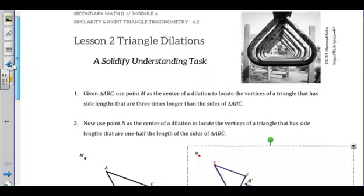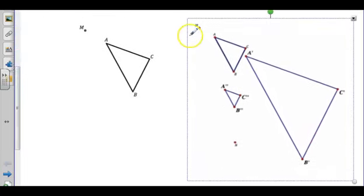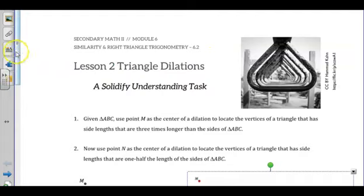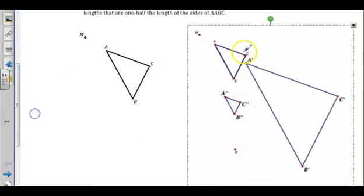In my pre-image, AB is here over A'B', and that should be equal in my proportion to BC, which is here, over B'C'.